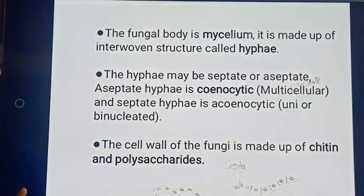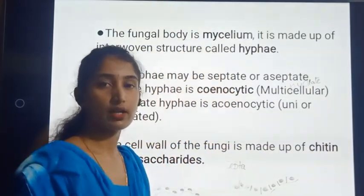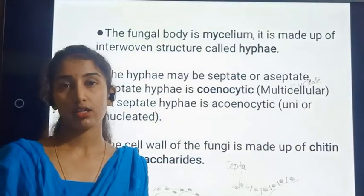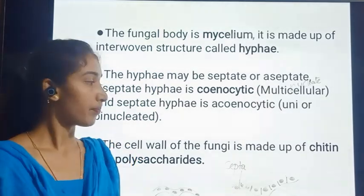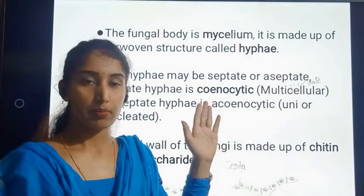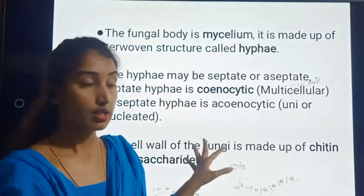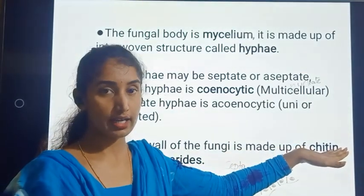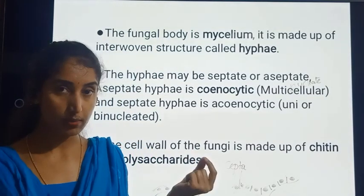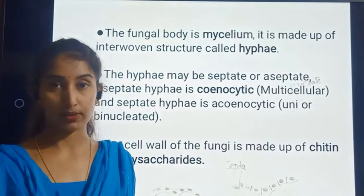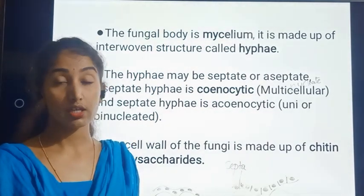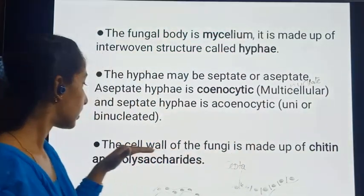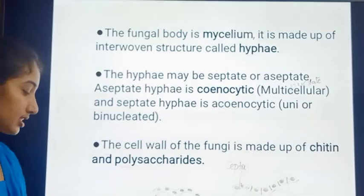The cell wall of fungi is made up of chitin and polysaccharides. This is an important distinction — in bacteria the cell wall is made up of a different component, and in protists there is no cell wall. But in fungi, the cell wall is present and is made up of polysaccharides as well as chitin.